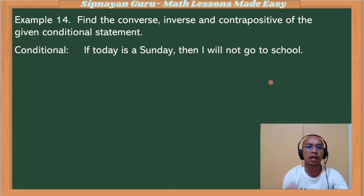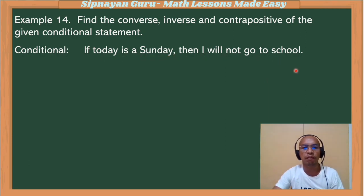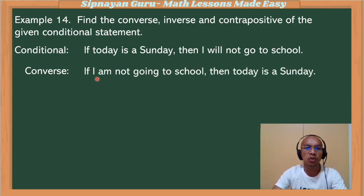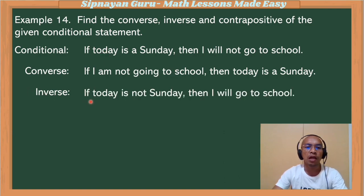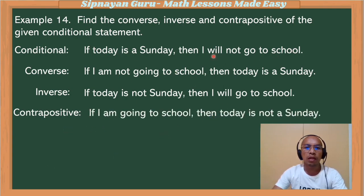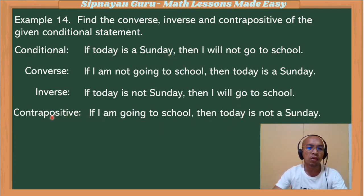In getting the converse, inverse, and contrapositive, we can change the wording of the statement so that we can read it smoothly with correct grammar. For the converse, if we switch the conclusion to be our hypothesis: if I am not going to school, then today is Sunday. Its inverse: if today is not Sunday, then I will go to school. For its contrapositive, we switch and negate: the opposite of I will not go to school is I am going to school — our new hypothesis — and the opposite of today is Sunday gives today is not Sunday, our new conclusion. So the contrapositive is: if I am going to school, then today is not Sunday.